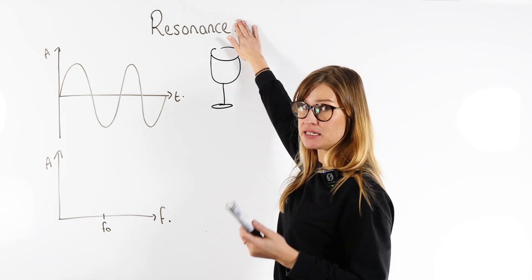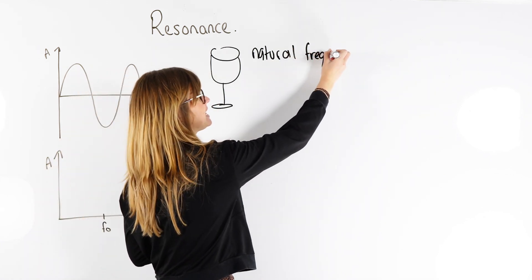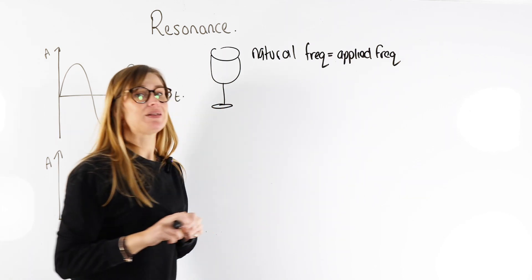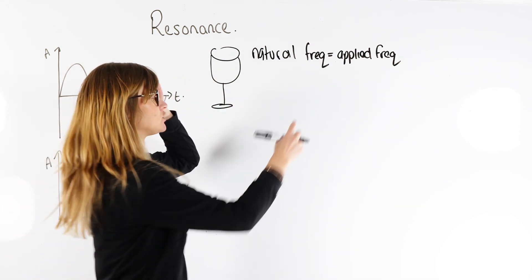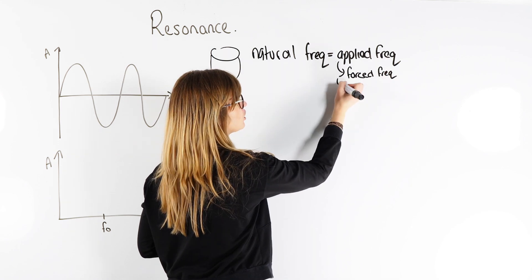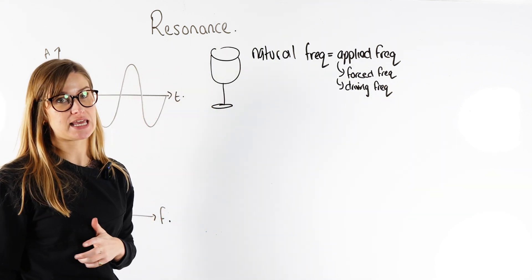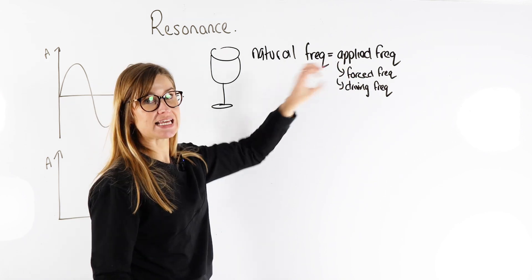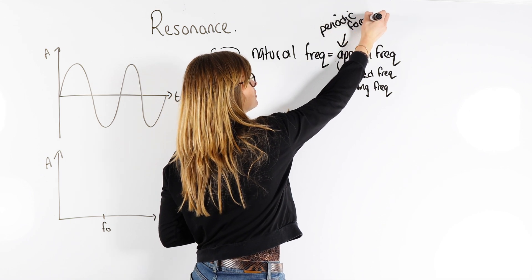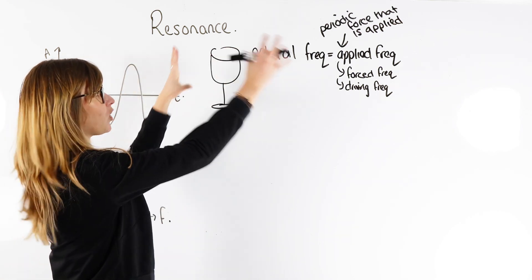Resonance happens when the natural frequency is exactly equal to the applied frequency. The applied frequency is something like a forced oscillation — you might also see it called the forced frequency, the driving force, or the driving frequency. These are all different ways of saying the applied frequency. And normally this applied frequency happens because of some periodic force that is applied to the system.